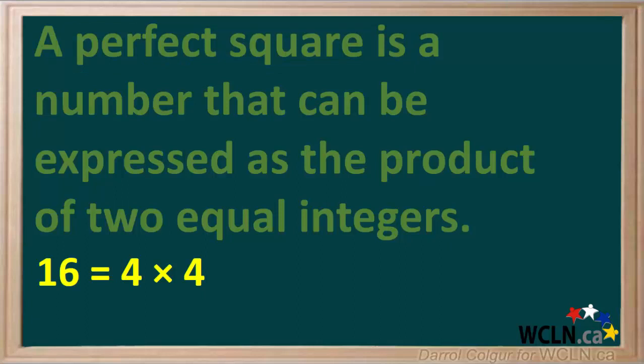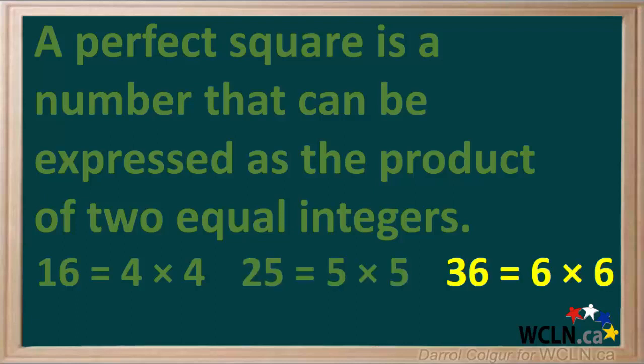For example, 16 is equal to 4 times 4, so it is a perfect square. 25 is equal to 5 times 5, so it is a perfect square. And 36 is equal to 6 times 6, so it is also a perfect square.